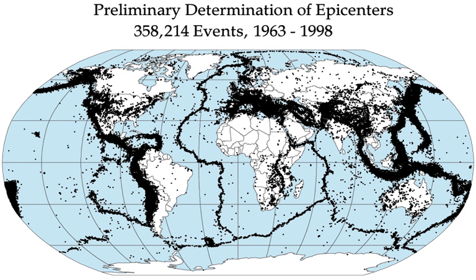An aftershock is an earthquake that occurs after a previous earthquake, the mainshock. An aftershock is in the same region as the main shock but always of a smaller magnitude. If an aftershock is larger than the main shock, the aftershock is redesignated as the main shock and the original main shock becomes a foreshock. Aftershocks are formed as the crust around the displaced fault plane adjusts to the effects of the main shock.